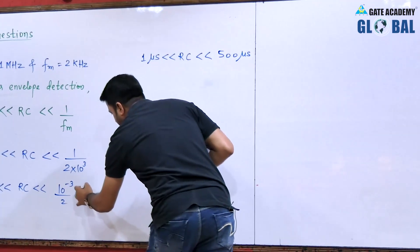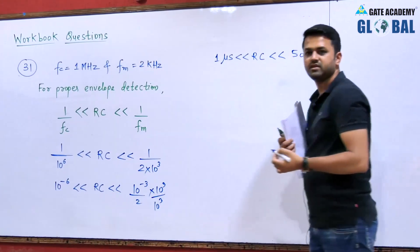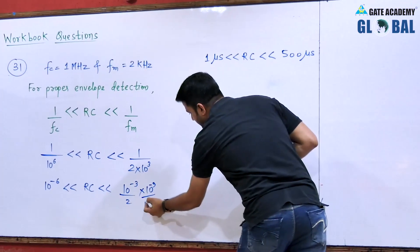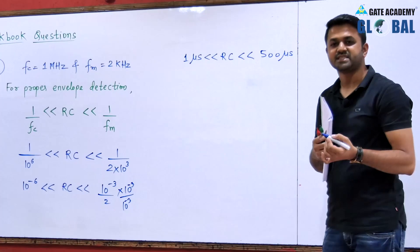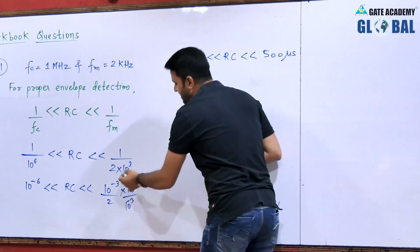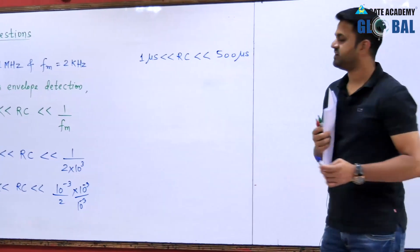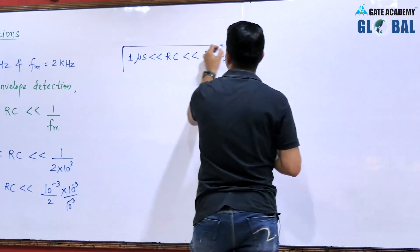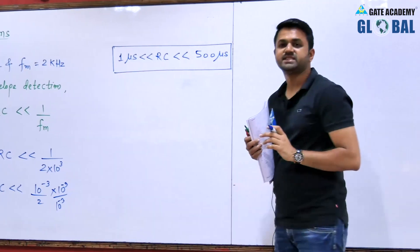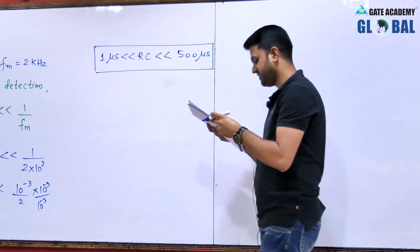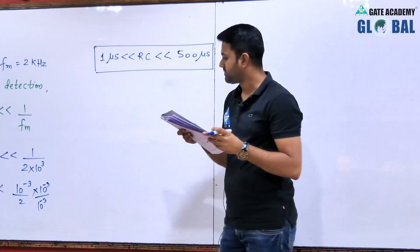To write in microseconds, we multiply and divide by 10^3. So 10^-3 times 10^-3 becomes 10^-6, that is micro, and 10^-3 goes into the numerator giving us 500. So the time constant should be in the range of 1 microsecond to 500 microseconds. We have option 500 microseconds in the choices.